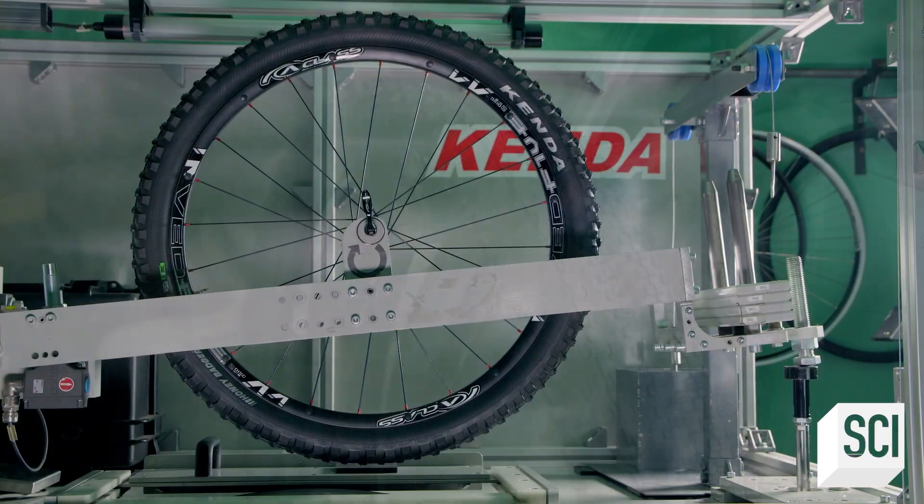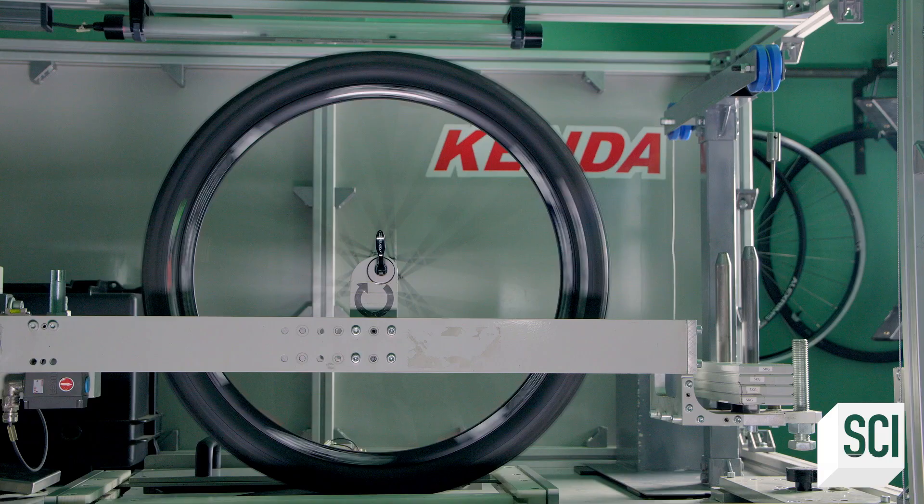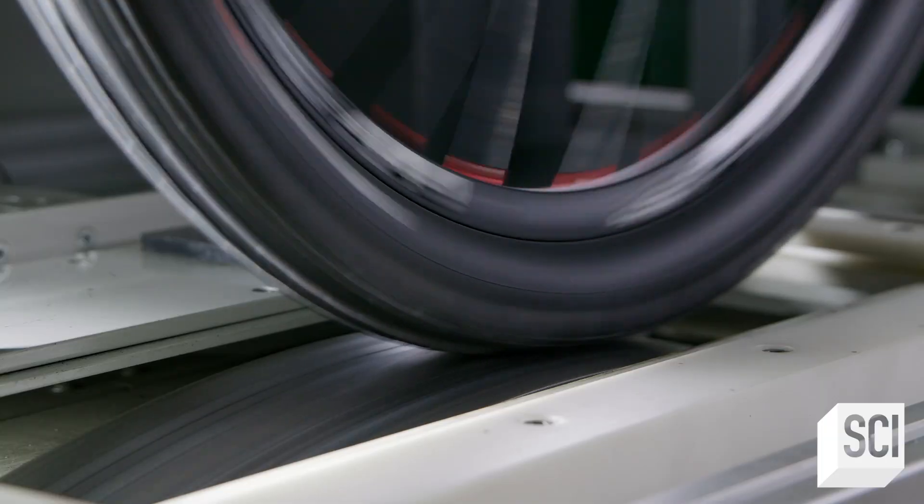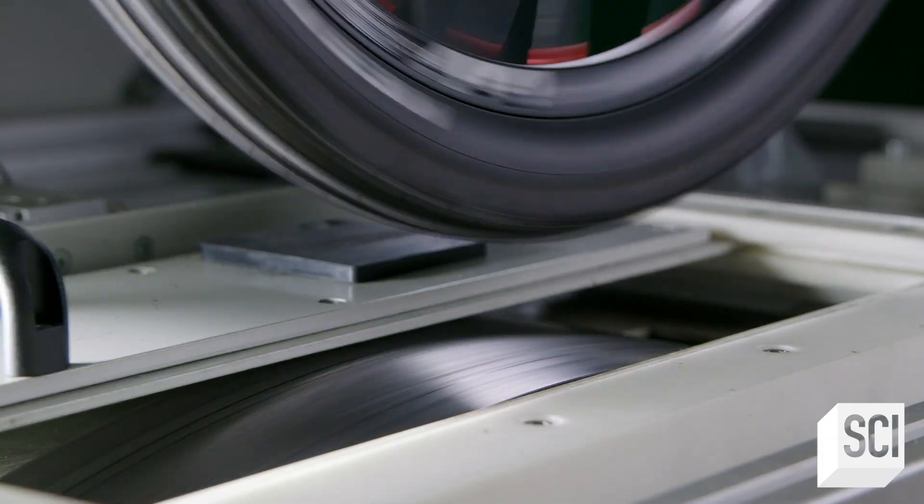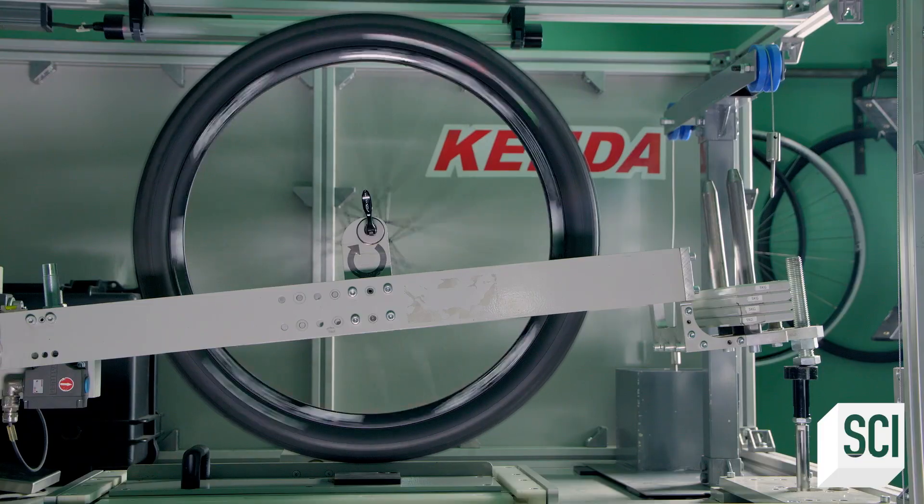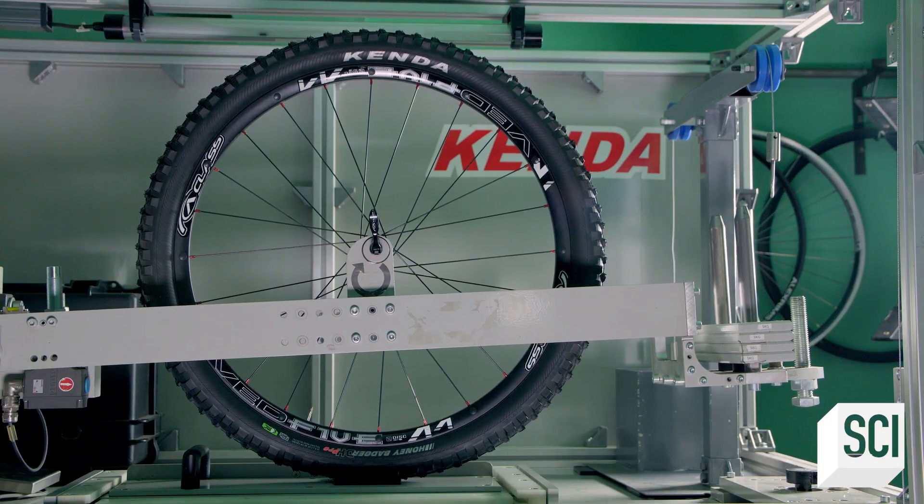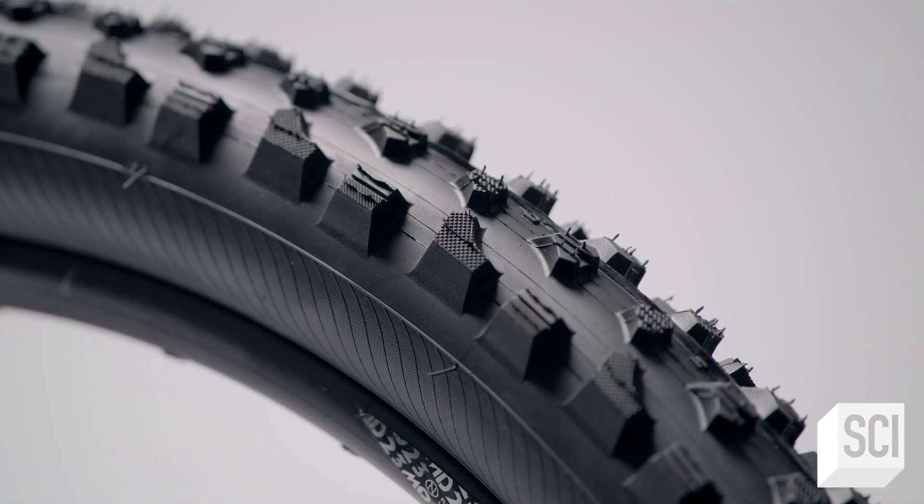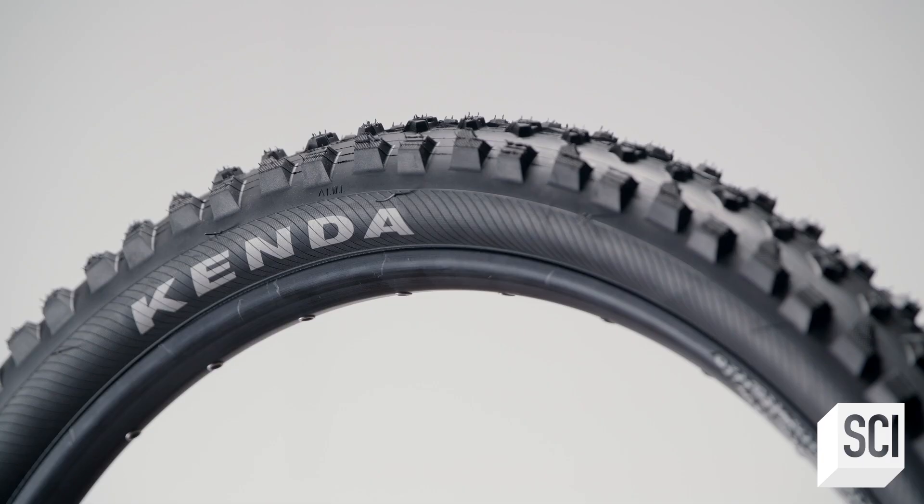The bike tire undergoes a durability test while a computer measures rolling resistance. That's the energy lost when the tire rotates and an indication of how easily the tire will roll. This mountain bike tire is now cleared to travel off the beaten path.